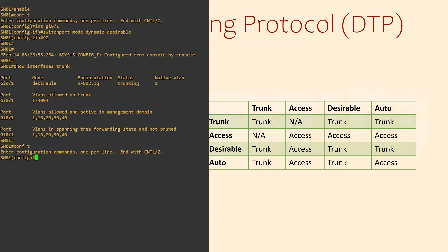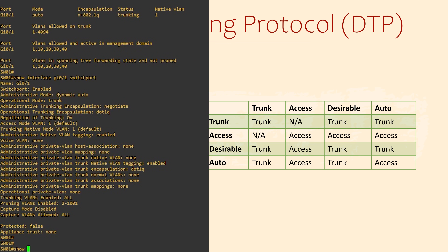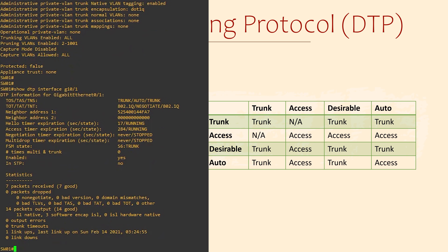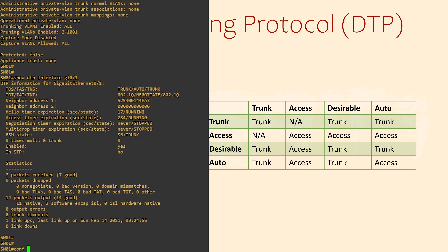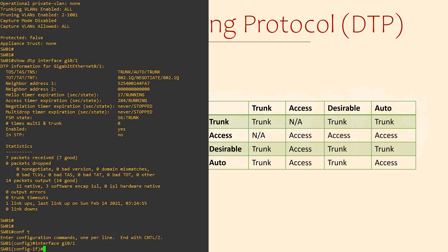One recommendation is to avoid configuring one side manually as a trunk and the other side manually as an access port. We can dig up more information with show DTP interface — it's not particularly exciting, but it may prove useful if you're troubleshooting. DTP sends messages between the two switches to convert a link to a trunk. If we want, we can disable this entirely by configuring the interface with switchport trunk no negotiate.